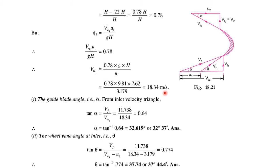The guide blade angle α from the inlet velocity triangle: tan α = Vf1/Vw1 = 11.738/18.34 = 0.64, that equals 32 degrees 37 minutes.